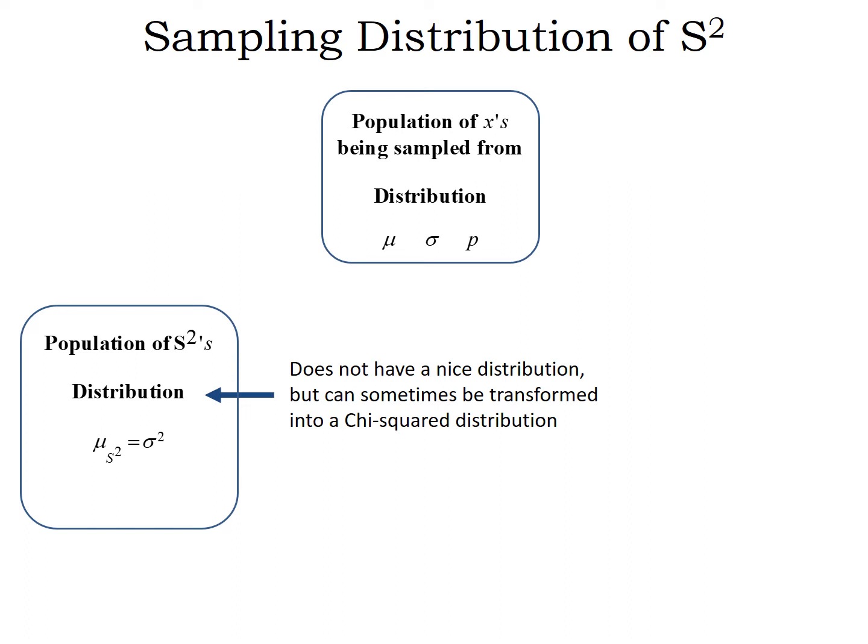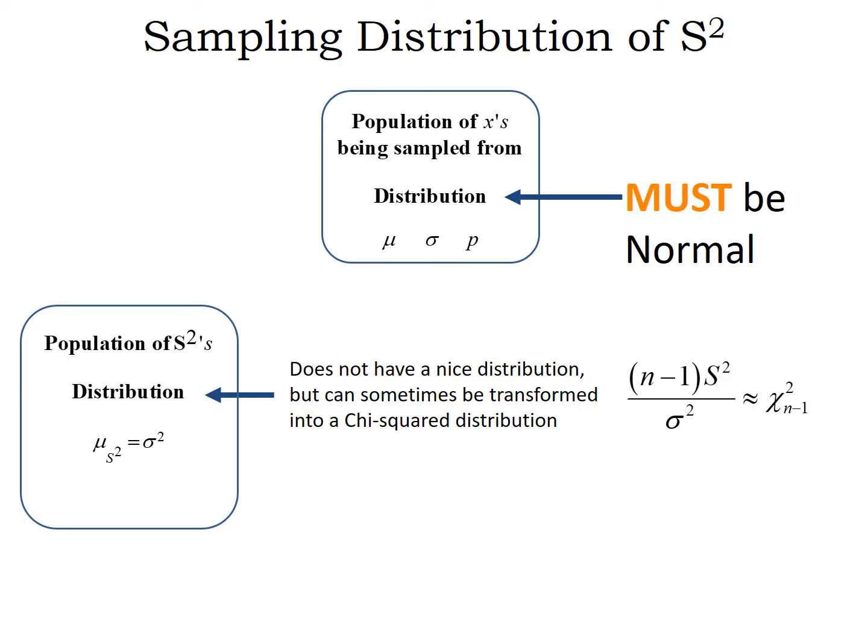However, under the right circumstances, we may not know how s-squared behaves, but if we make some adjustments — if we do a transformation — we can relate the behavior of s-squared to the behavior of a chi-squared distribution. To do this, we do need to look at the population being sampled from, our parent population. The parent population has to be normal. As long as the population being sampled from is normal, then we can transform our sample variance s-squared into a chi-squared distribution by taking n-1 times s-squared divided by sigma-squared.